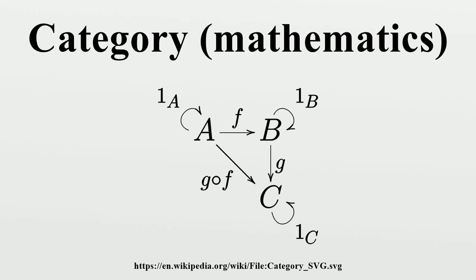In mathematics, a category is an algebraic structure that comprises objects that are linked by arrows. A category has two basic properties: the ability to compose the arrows associatively and the existence of an identity arrow for each object.